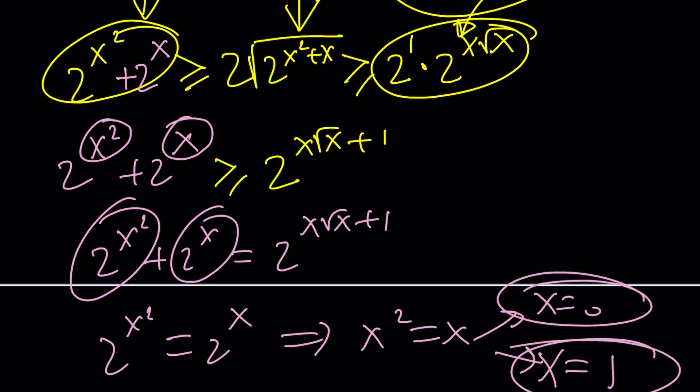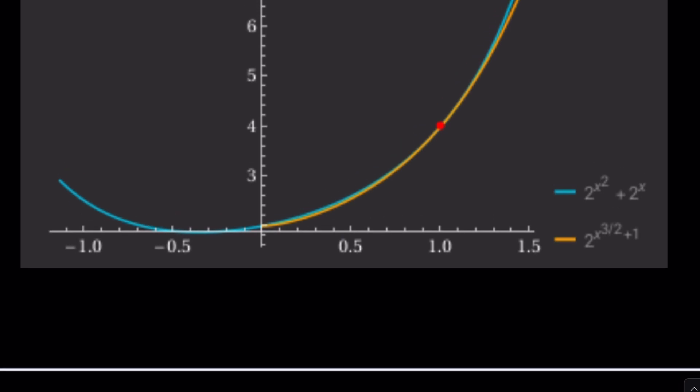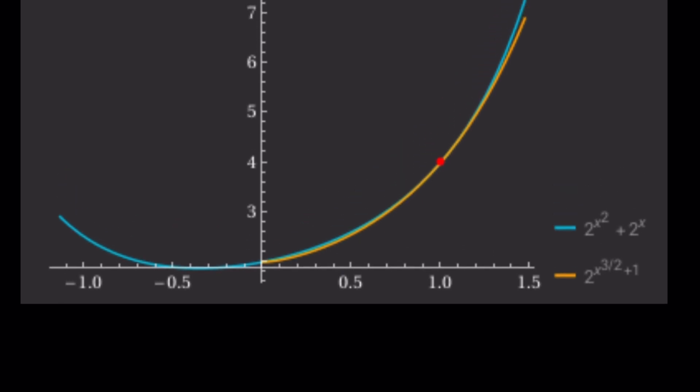Which brings us to all the solutions, because there can be no other solutions. AM-GM inequality guarantees the solutions. And here you can see, I don't know if you can see the 0, but the intersection point at 1 is clearly visible. And this brings us to the end of this video.